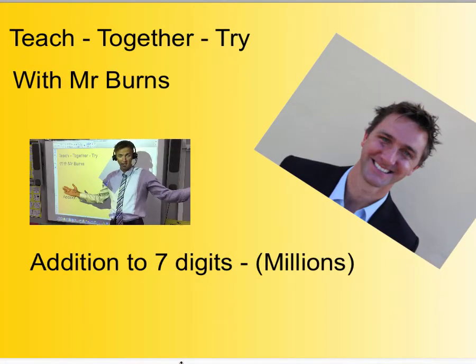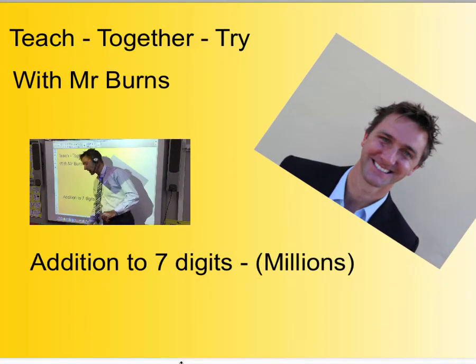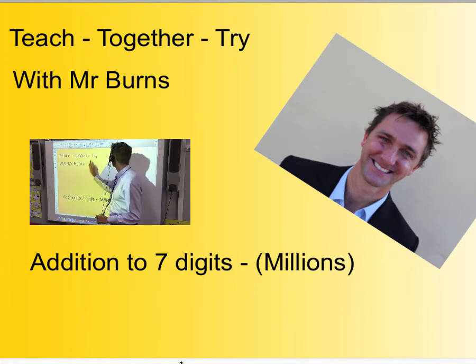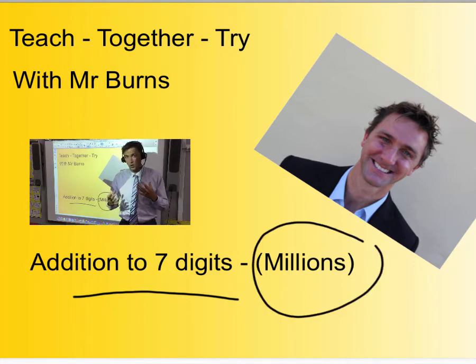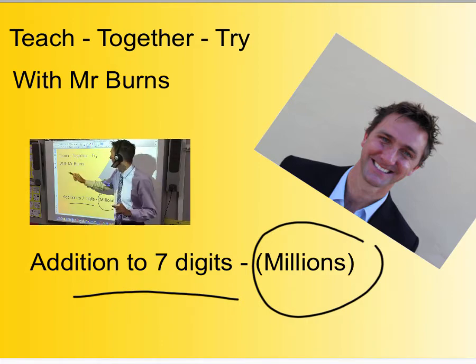Two, one. Welcome to Teach Together Try with Mr. Burns. Today we're going to be looking at addition to seven digits. That means numbers that are seven digits long, and we're really dealing with millions when we talk about seven-digit numbers. We're going to be using the Teach Together Try process, so let's do that now.